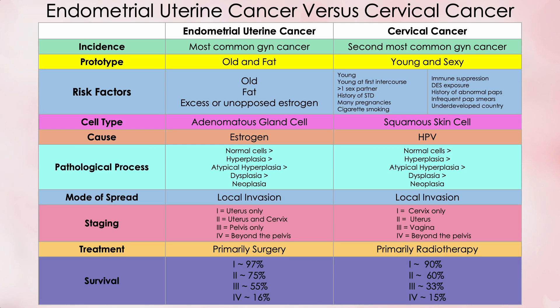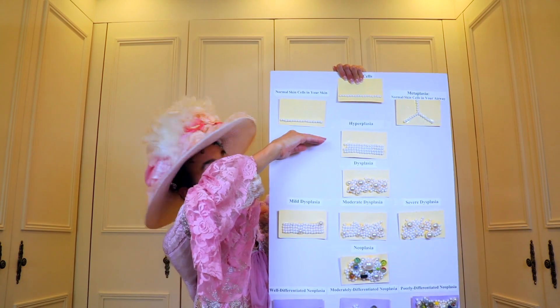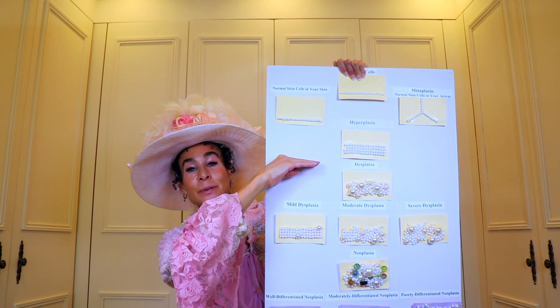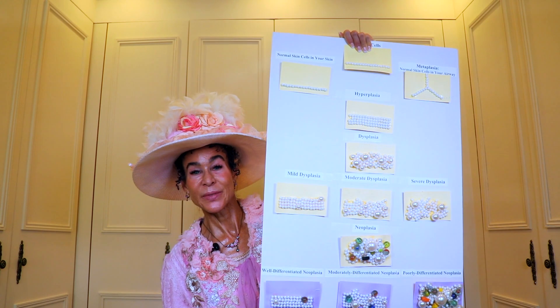Now, what about their similarities? The only chart factors that are similar for the two are pathological process and mode of spread. Both follow the same pathological process: normal cells transform into hyperplasia, then atypical hyperplasia, then dysplasia, then neoplasia. And both grow by local spread rather than via lymph or blood. But there is yet another similarity not on the chart, and in my opinion it's the most significant one of all.